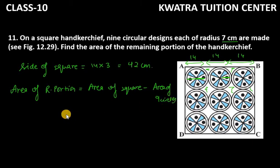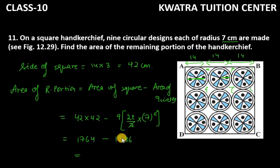So how much is the area of square? 42 into 42 minus 9. How much is the area of circle? Pi, which is 22 over 7, R square. How much is r? 7 square. 7 from 7 cancel. 1764. 42 into 42 is 1764. Then you have 9 into 22 into 7 which is 1386. Now if you subtract both, you will get the answer as 378 cm square.